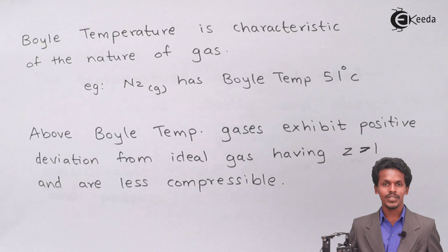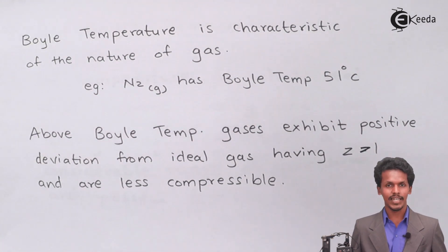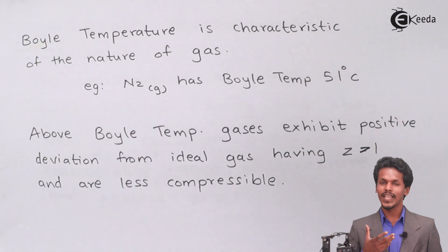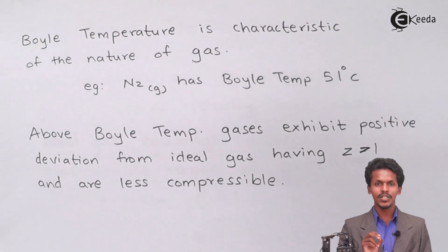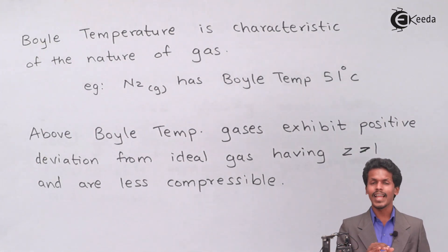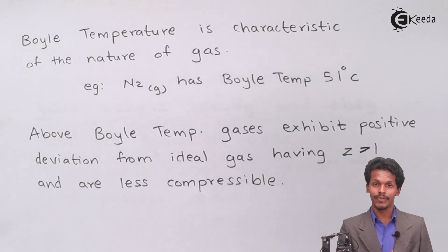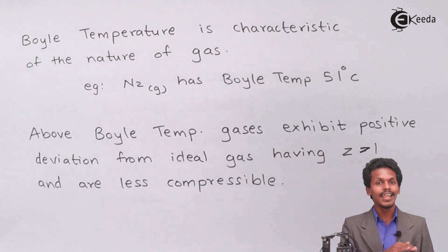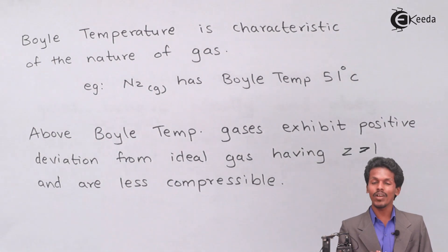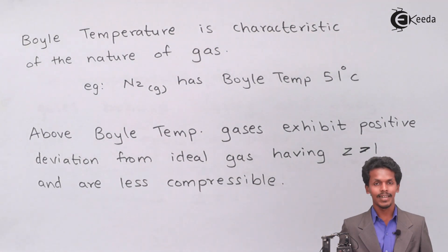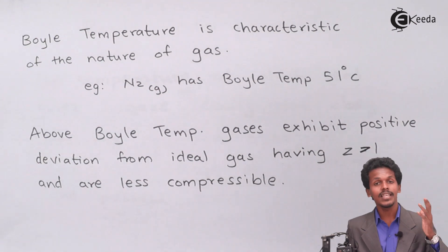We know that real gases are those which deviate from ideal behavior. If we look at the graph, the ideal gas behavior is parallel to the X axis, which means Z equals to 1. But gases whose Z value is more than 1 are essentially those gases which are less compressible and cannot be compressed like an ideal gas.